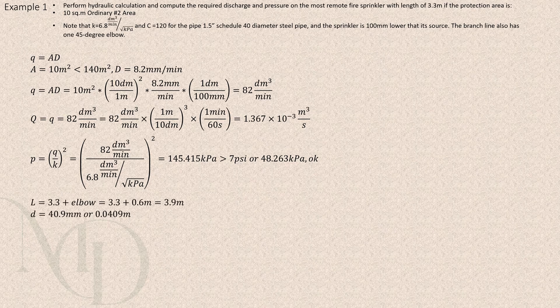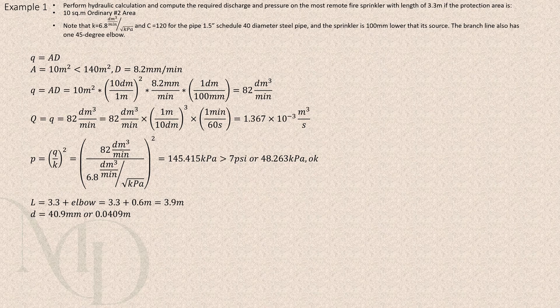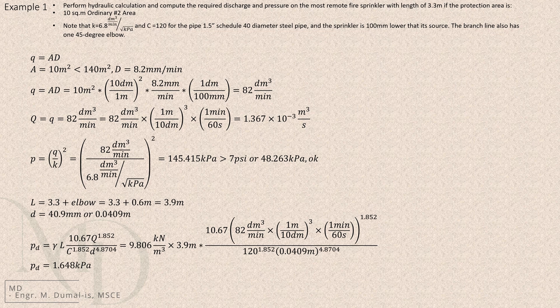Once we have that, we proceed to find the effective length of the branch line. This is done by adding the actual pipe length and the equivalent length of the fittings. Since the branch line has one 45-degree elbow, we refer to table 28.2.3.1.1 to get its equivalent length. From there, we can compute the pressure drop along the line.